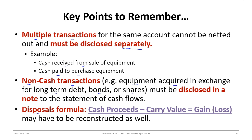Don't forget the disposals formula. It can be used to determine cash proceeds if unknown, or to determine the gain or loss if not on the income statement. If we know the cash proceeds and gain or loss, we can figure out the carrying value. If we know the carrying value and accumulated depreciation, we can find the cost — and if we know the cost, we may be able to determine whether any asset was acquired in exchange for shares.